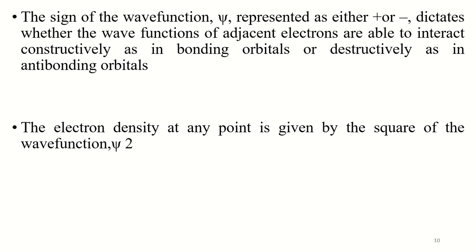The sign of the wave function psi represents either positive or negative, which dictates whether the wave functions of adjacent electrons interact constructively — as in bonding orbitals — or destructively — as in anti-bonding orbitals. Note that the positive or negative sign does not refer to electronic charge, but can be linked to the relative phase of the wave motion, which changes every 180 degrees.